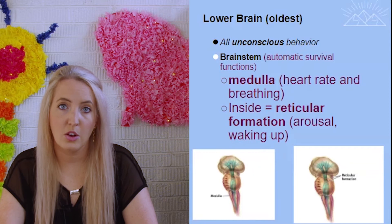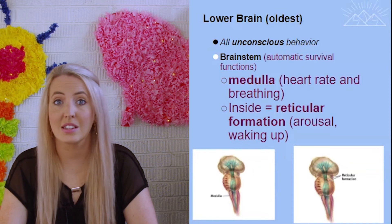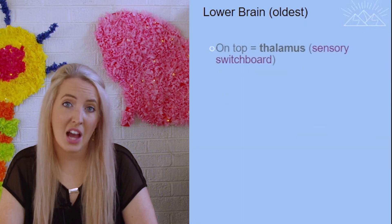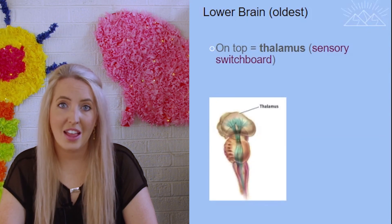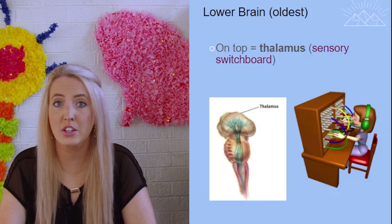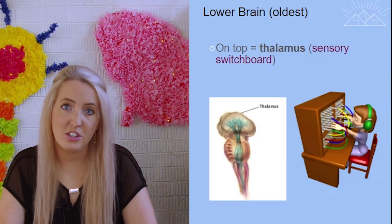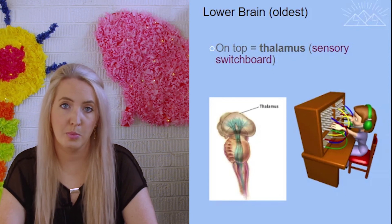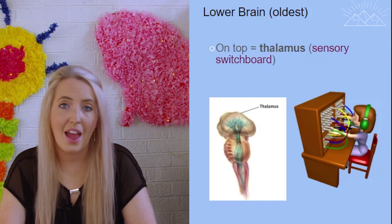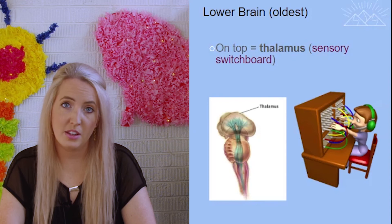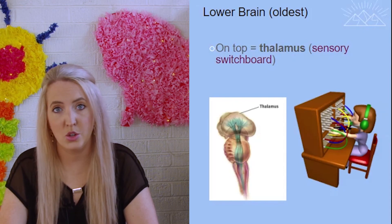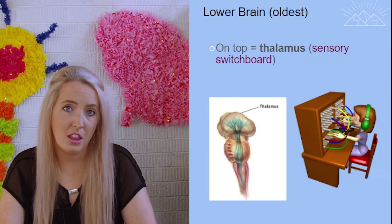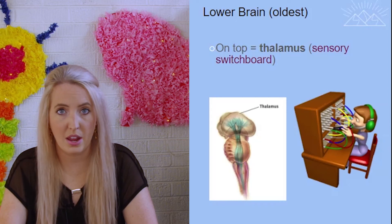Also in our brainstem is the reticular formation, which is what essentially wakes us up in the morning. If we didn't have a reticular formation, we would fall into a coma. On the very top of the brainstem is the thalamus, our relay center — our sensory switchboard. The thalamus's job is to take in all of the information from our body and send it to the correct part of our brain. If we see something, it goes to the thalamus and then to our visual cortex; if we hear something, it goes to the thalamus and then to our auditory cortex.